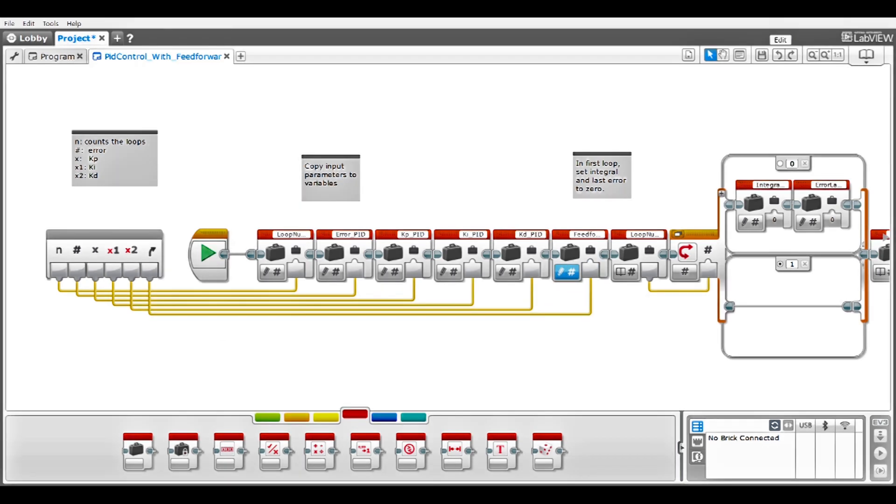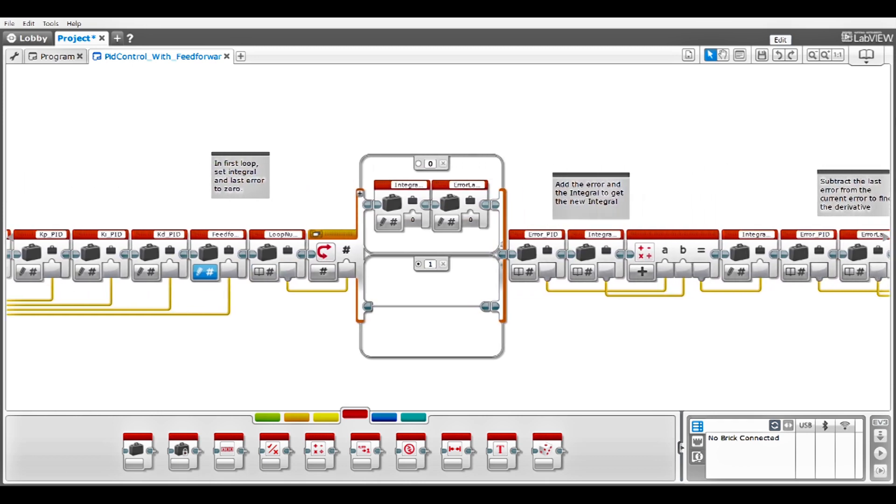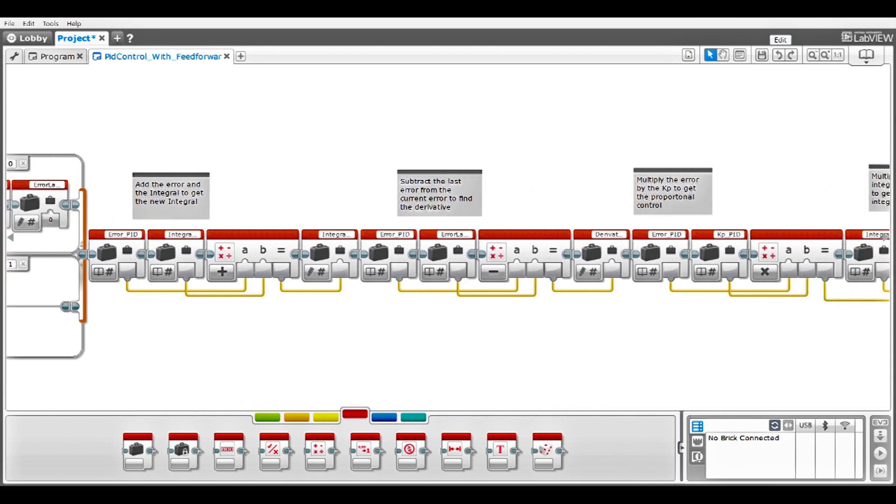After copying the input parameters into variables, we check if it is in the first loop. If so, then the integral and last error are set to zero. The error is added to the integral to calculate the new integral.